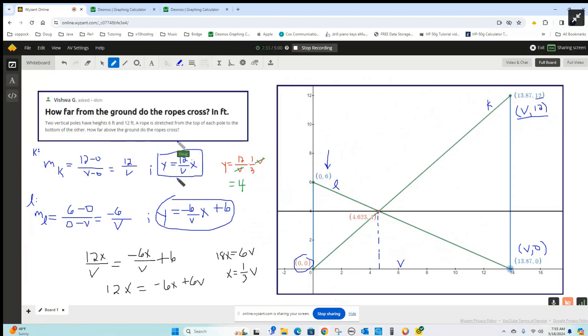And since these both equal Y, we can use the substitution method to solve for X. So 12 over V times X has to equal negative 6 over V times X plus 6.